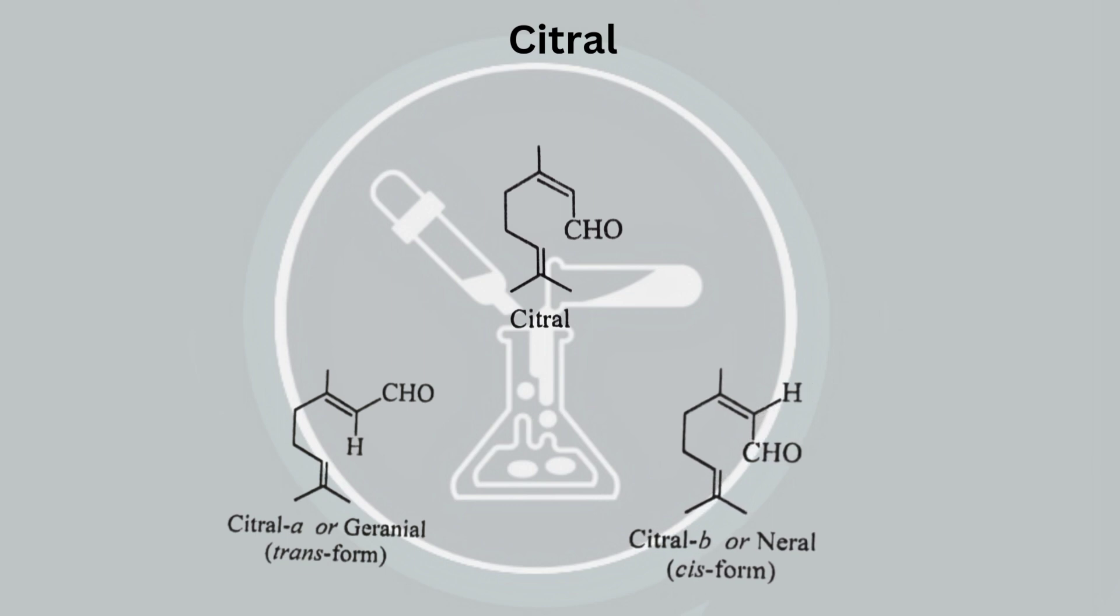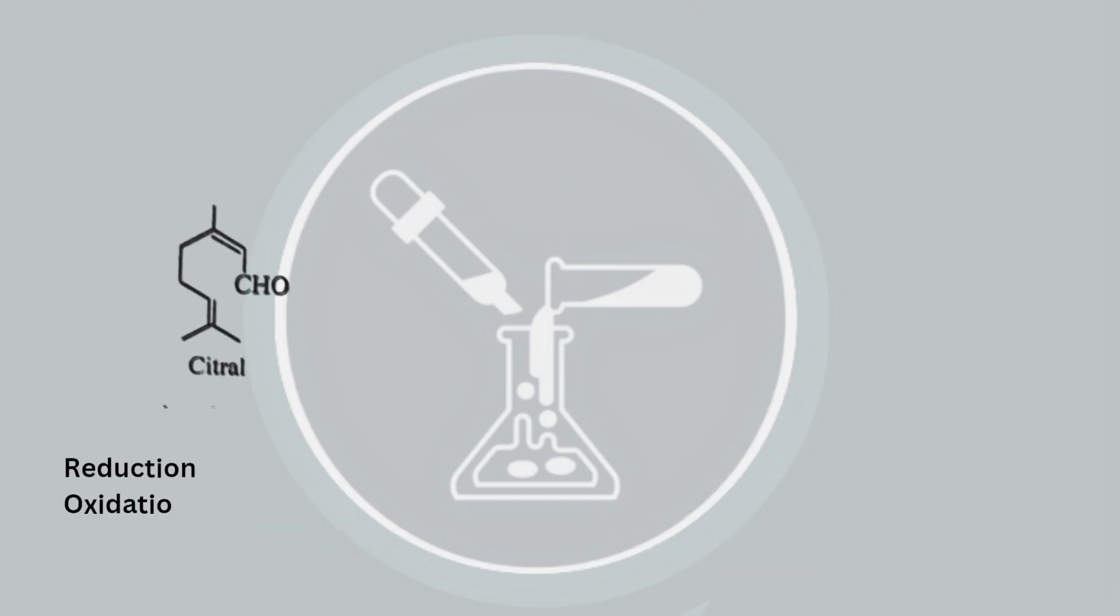The two isomers have slightly different properties, but they are both highly reactive due to the presence of the aldehyde functional group. Citral is a relatively unstable compound and can undergo several chemical reactions, including oxidation, reduction, and addition reactions.